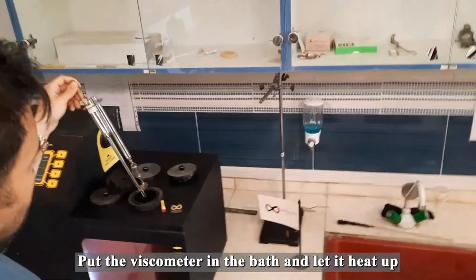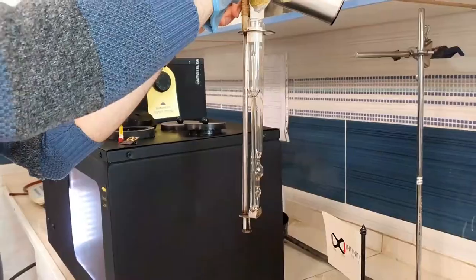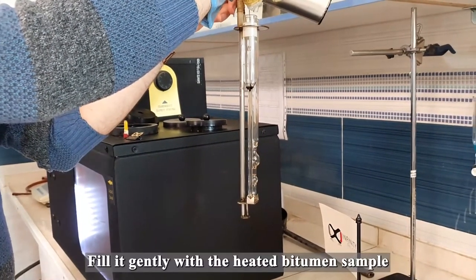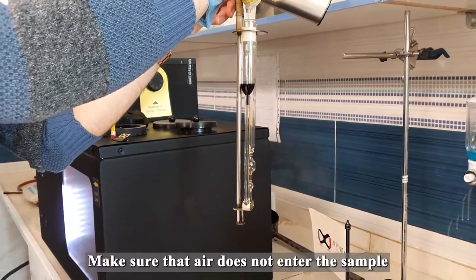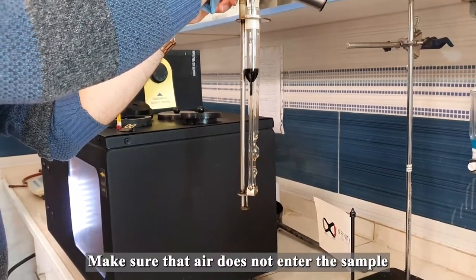Put the viscometer in the bath and let it heat up. Fill it gently with the heated bitumen sample up to the marked filling line. Make sure that air does not enter the sample.